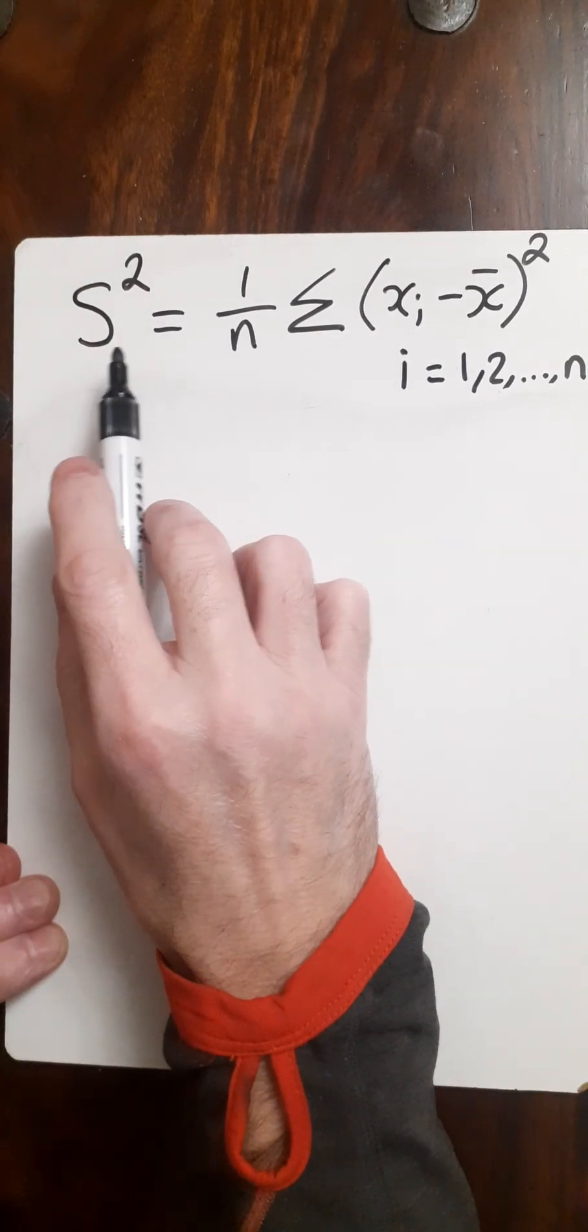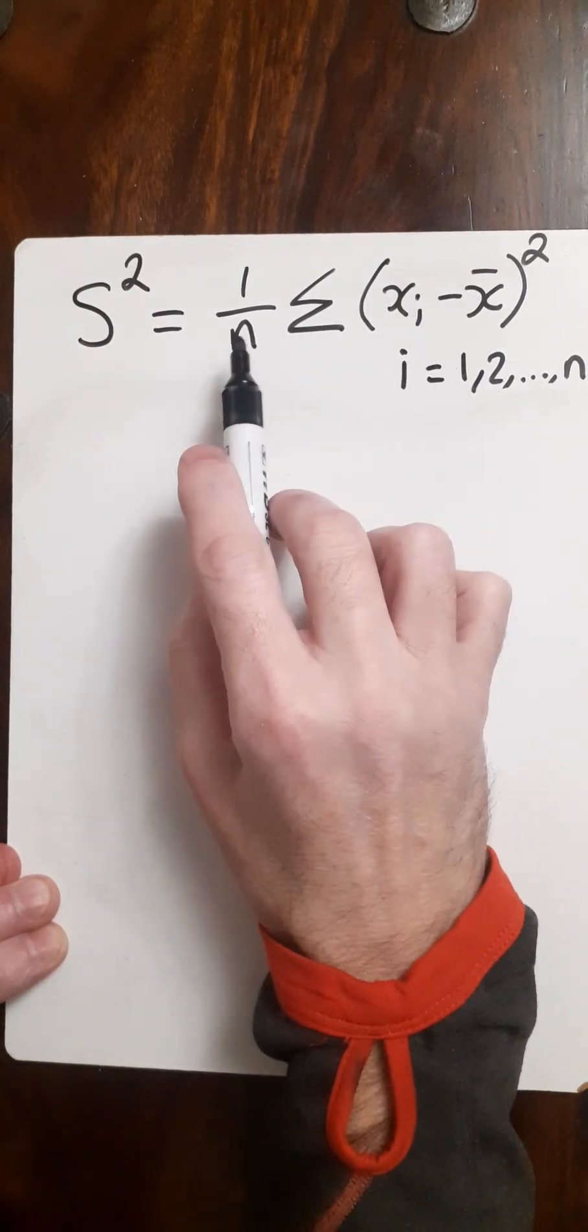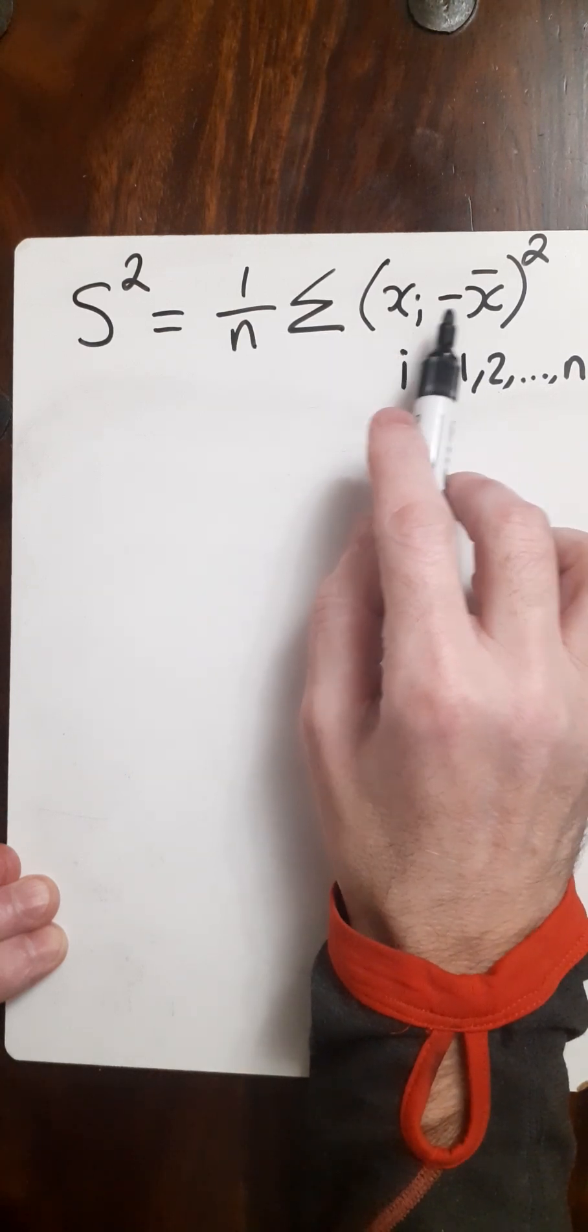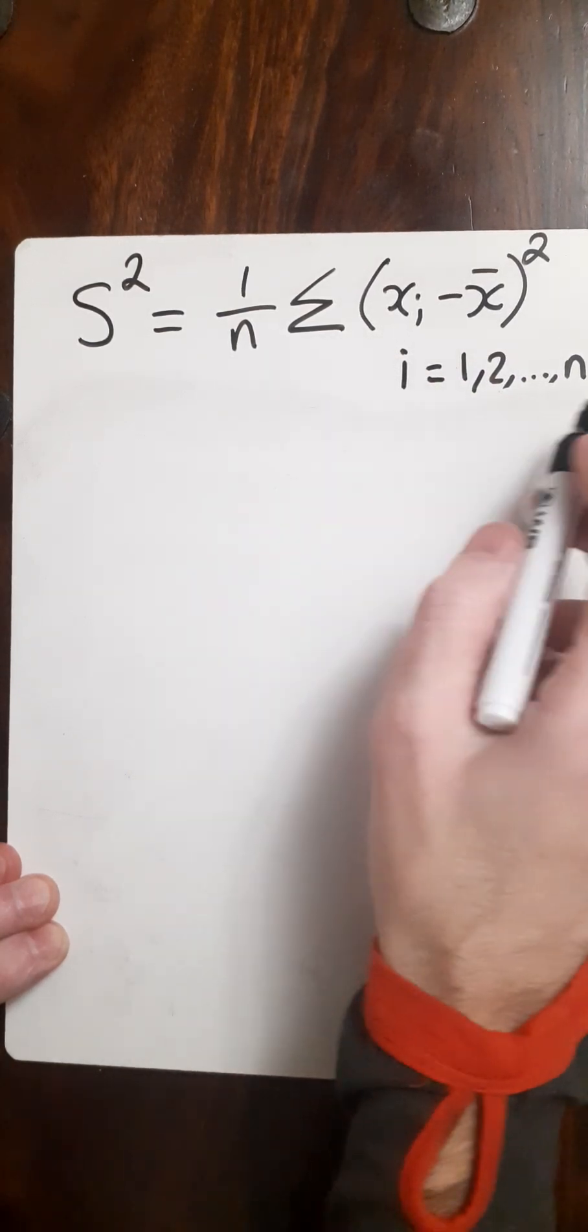Here I'm going to show you how to rewrite the variance in another very famous format. I've got 1 over n times the sum of the difference of each data point from the mean squared, for i equals 1 to n.